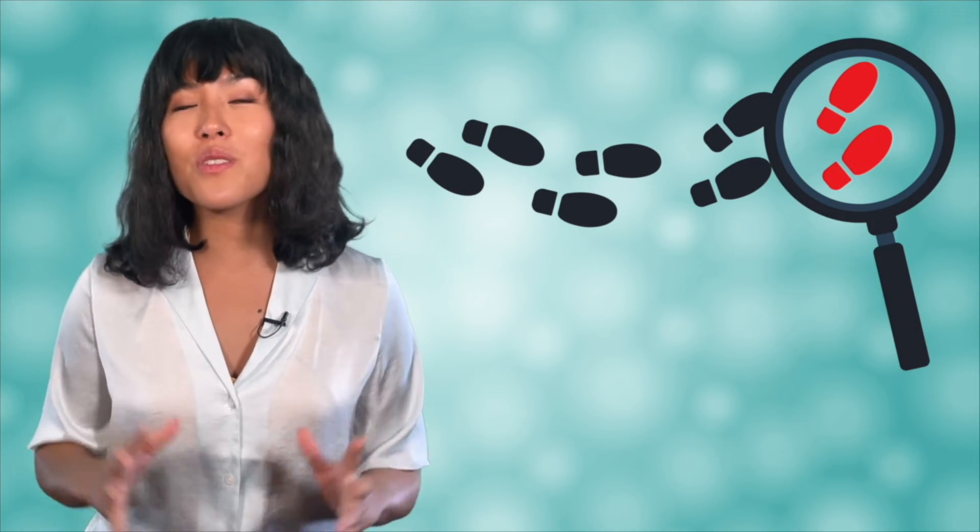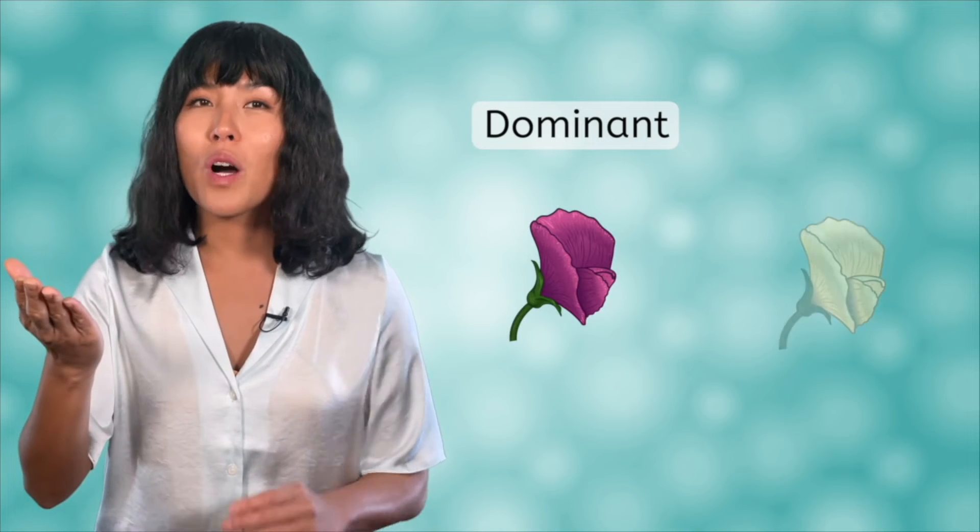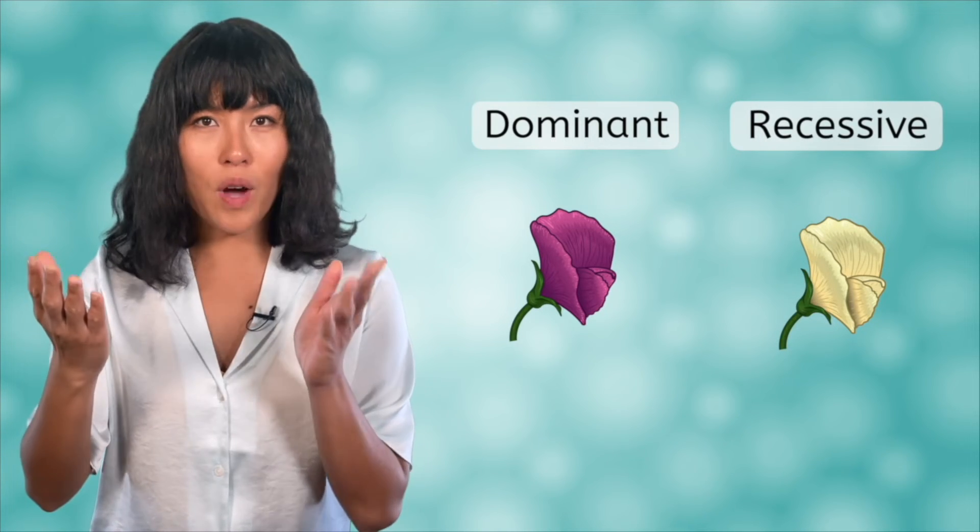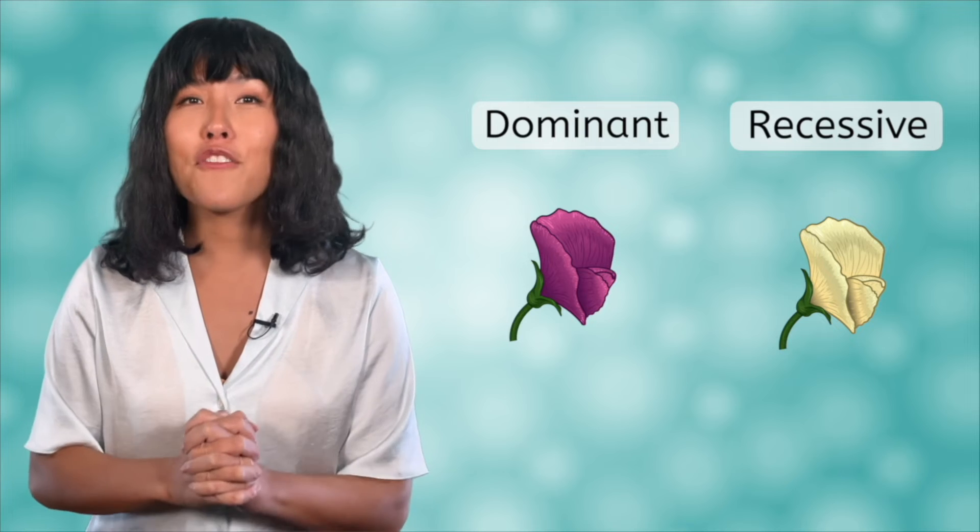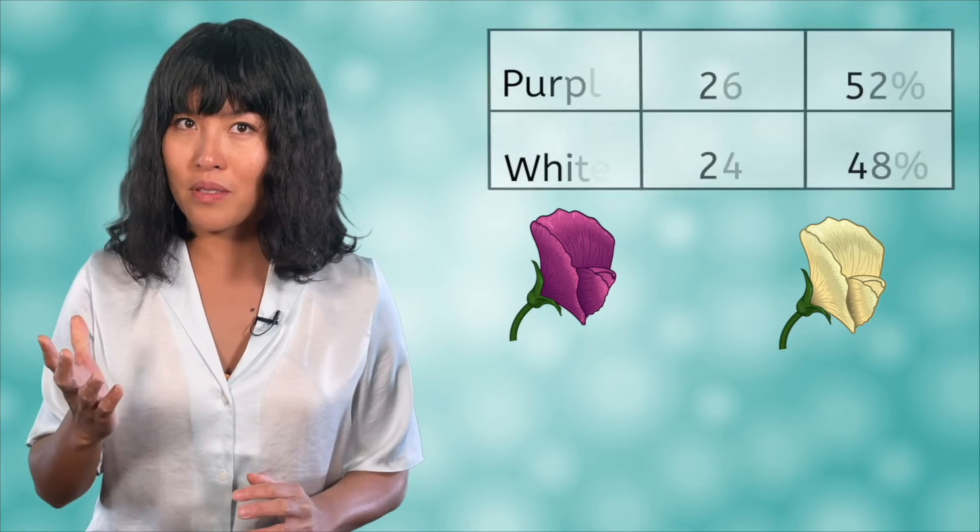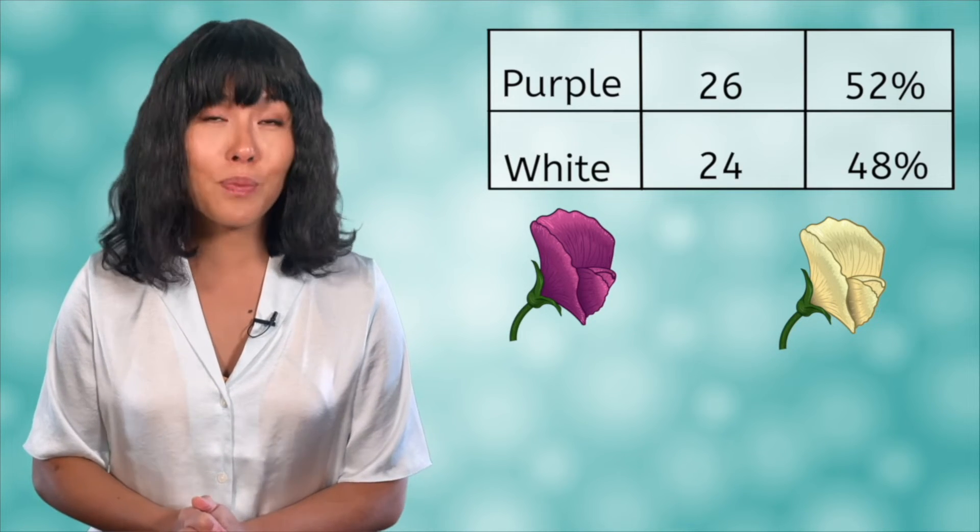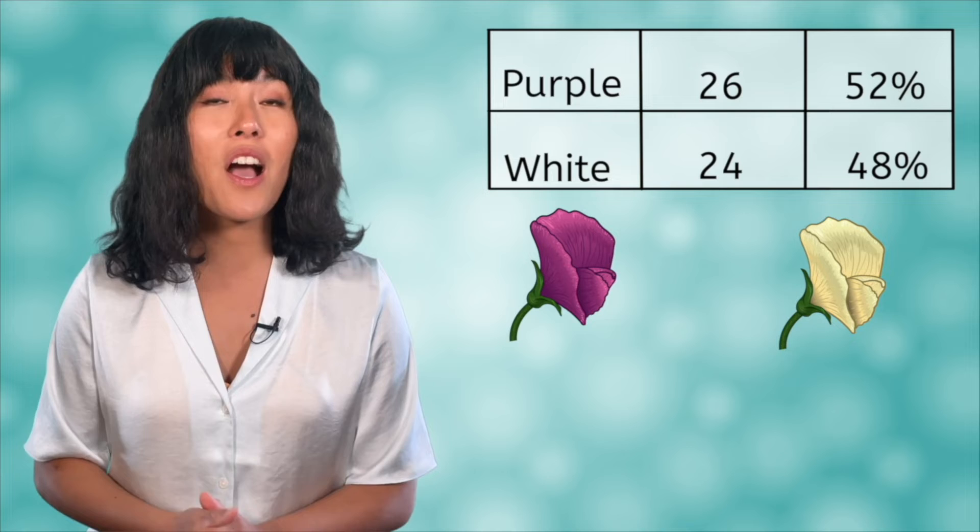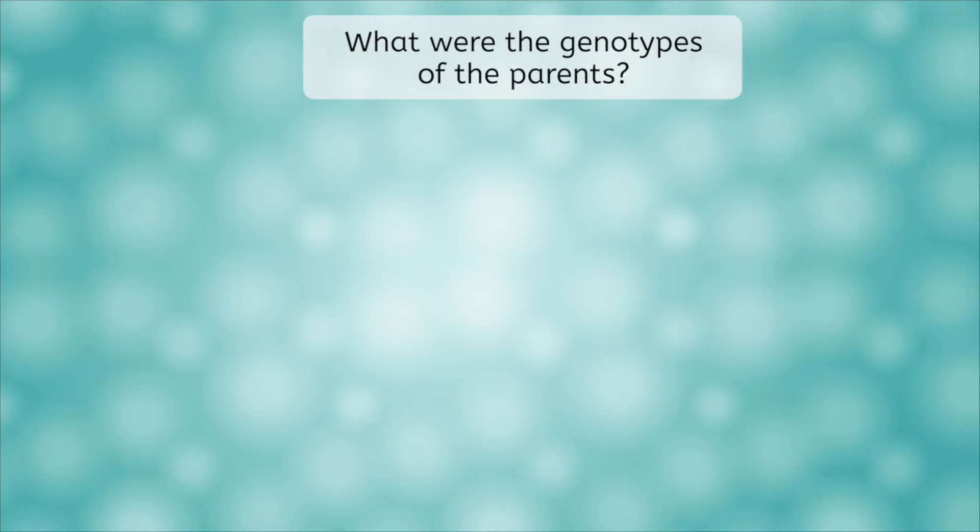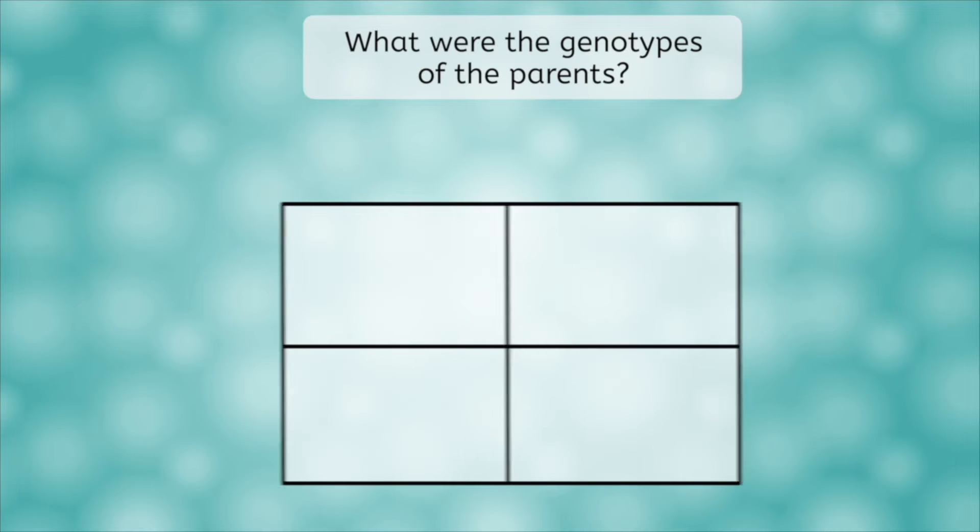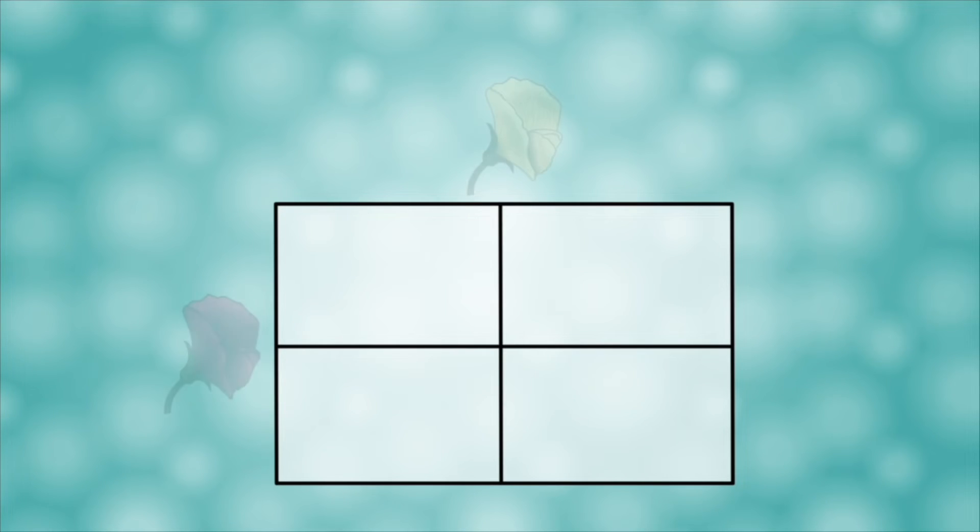For our next example, we're going to be detectives and work backwards to solve a mystery. We've got another set of Mendel's pea plants, and this time we're looking at the flower color. Purple is known to be dominant, while white is recessive. A purple and white plant were crossed, and the offspring had the following traits. 26 were purple and 24 were white. This gives us an approximately 50-50 split for purple and white in the offspring group. Our mystery to solve: What were the genotypes of the parents? Do we have enough information to figure this out?